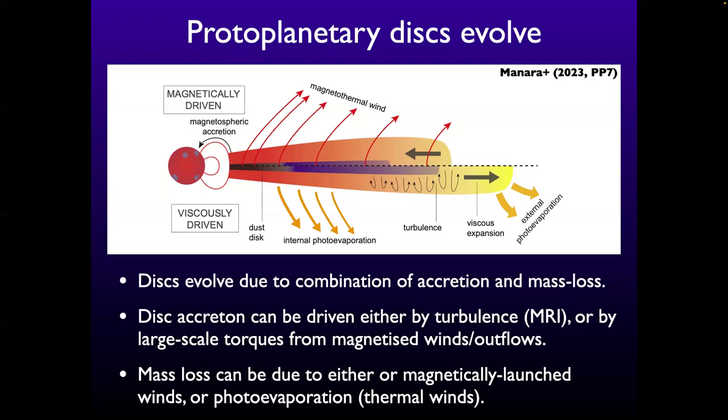This goes back to classical accretion disk theory. If you want to accrete in a disk around a star, you have to lose angular momentum. A Keplerian orbit has to lose angular momentum to go inwards. Historically, we always thought this works the same way as accretion disks around black holes — the disk is turbulent, turbulence exchanges angular momentum, some material passes the angular momentum outwards, the outer disk expands, and the inner disk accretes. Mass loss was thought to be due to thermal processes — stellar radiation heating the disk surface and driving a wind, called photoevaporation. That removes mass but doesn't drive accretion — it just depletes the disk.